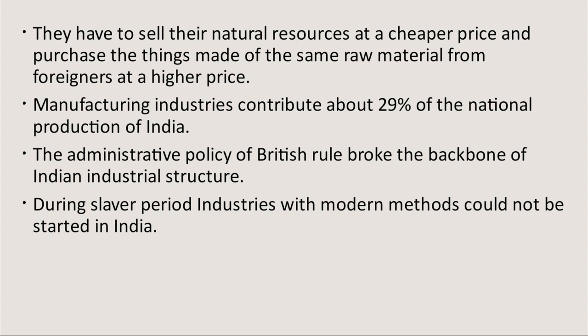The administrative policy of British rule broke the backbone of Indian industrial structure. Please underline that line also. The Britishers' plan was to stop our production so that only they would get their profits. During the period of slavery — that is, during the time of the British — industries with modern methods could not be started in India. Because of the policies followed by the British towards Indian industries, we were not able to start new industries in our country.